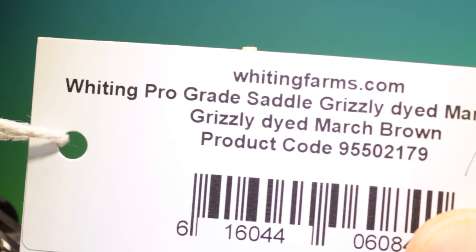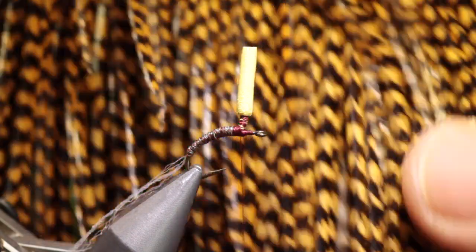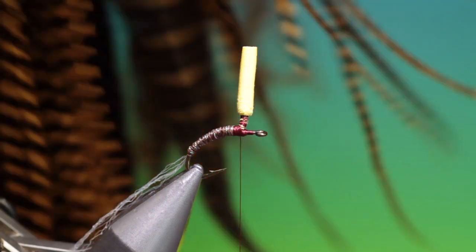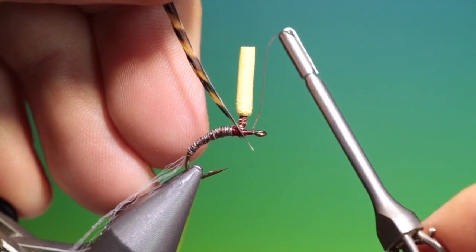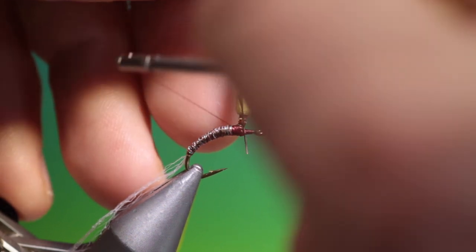Then what we need. This is a grizzly dyed March brown. Beautiful colours. So I've stripped one side of the hackle on this. And we'll go over there like that across.